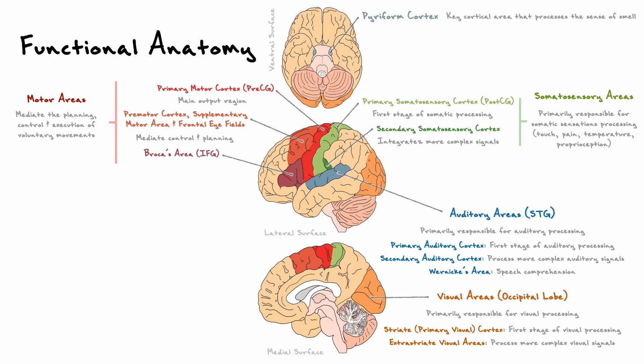Two interesting areas that are part of the premotor cortex are the frontal eye field, which contributes to proper eye movements, and Broca's area in the inferior frontal gyrus, which is often considered to be responsible for proper speech production.